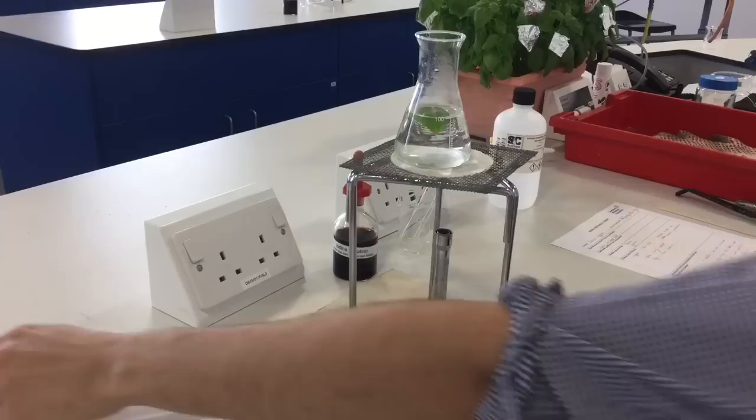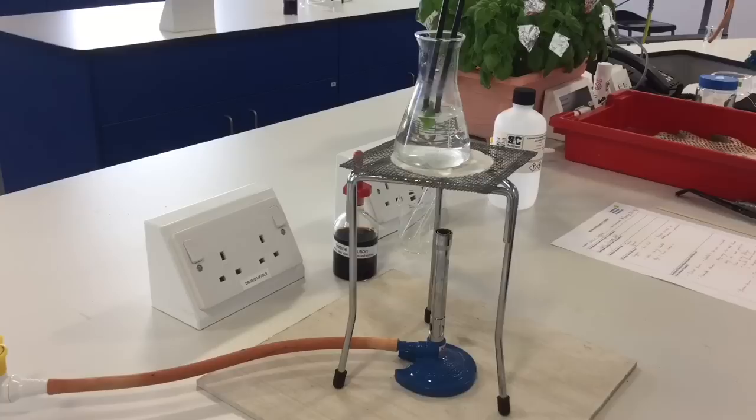Once you've seen a little bit of steam coming out and you're satisfied that it's warmed up enough, you can take your leaf out. Switch off your Bunsen burner—you can light it again later for the next part—and we're going to move on to the next stage.